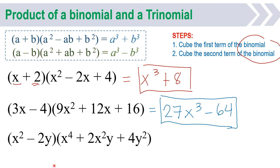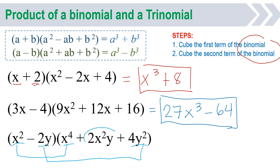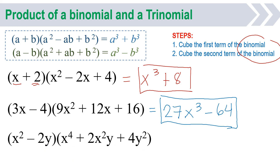Last example. Before we proceed with the answer, we check if this is really a special product. The first and last term must come from the square of the first and last term of the binomial: x squared times x squared is x raised to 4, and 2y times 2y is 4y squared. Then the middle term must be the combination of the two: x squared times 2y is 2x squared y. Correct — so let us proceed with the answer.